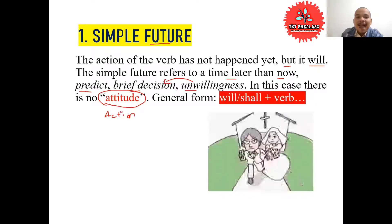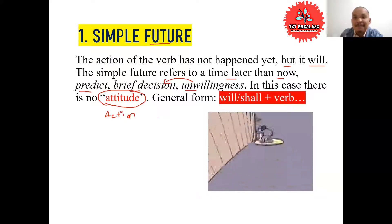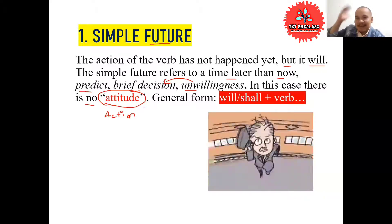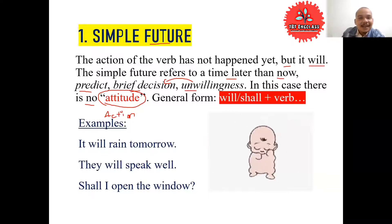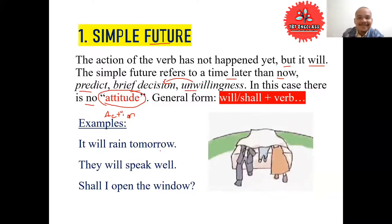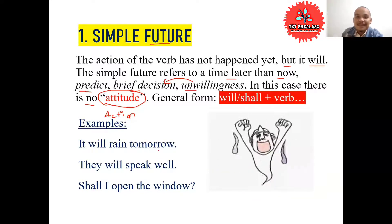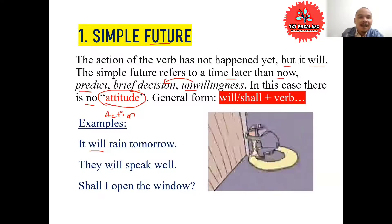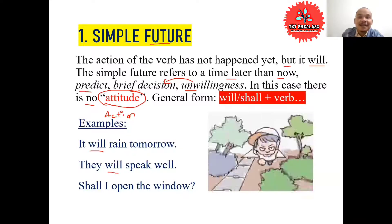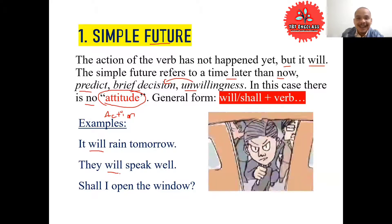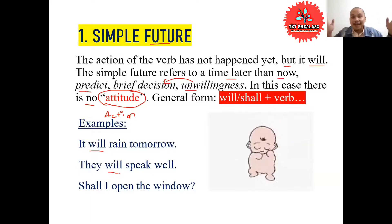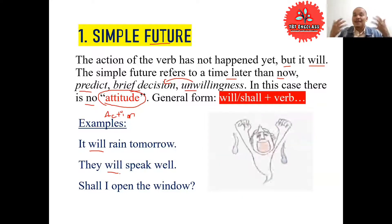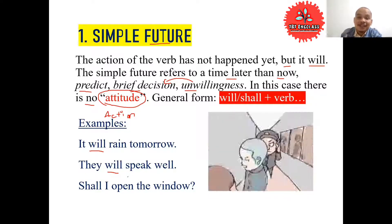The action we predict in the future — we admit that action in the future now, whether we predict or not. For example: 'It will rain tomorrow' — we predict tomorrow it's going to rain. 'They will speak well' — we don't know for sure, but we predict. For instance, they study English now, and you can predict: they will speak well next month or next year after they finish their courses.